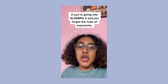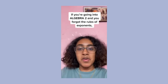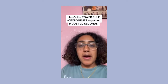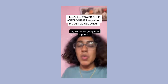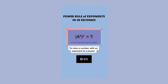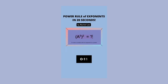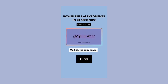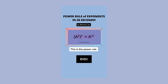If you're going into Algebra 2 and you forgot your rules of exponents, what are you doing? Here's the power rule of exponents explained in just 20 seconds. To raise a number to an exponent to a power, multiply the exponents — that is the power rule.